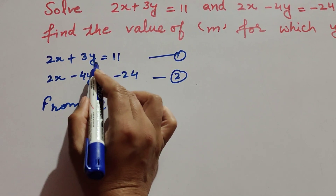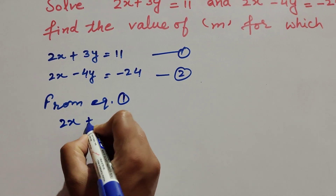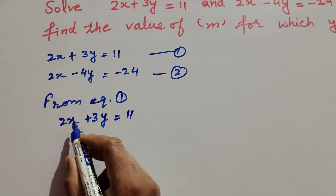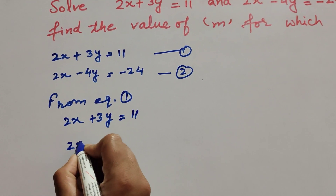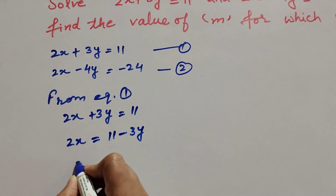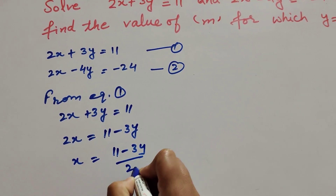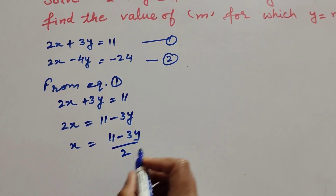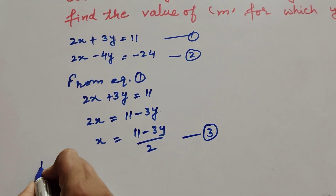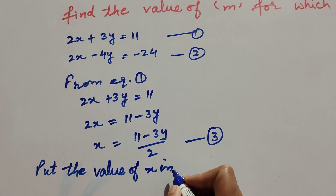From equation number 1: 2x plus 3y equal to 11. First we find the value of x. So 2x is equal to 11 minus 3y, and x is equal to 11 minus 3y over 2. We mark this as equation number three.